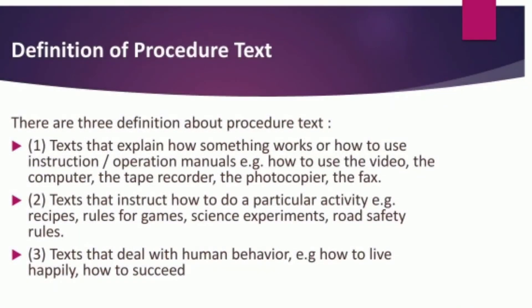There are three general structures in a procedure text. The first one is a goal or purpose. The second is materials or tools. The third is steps or methods. To know if a text is a procedure text is simple: if the title starts with 'how to make' or 'how to use,' we can define that the text is a procedure text. In this PowerPoint, I will show you more about procedure text.